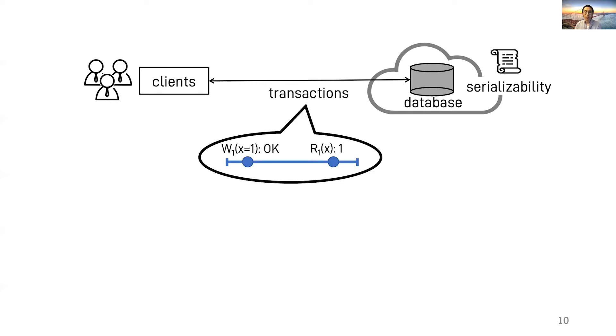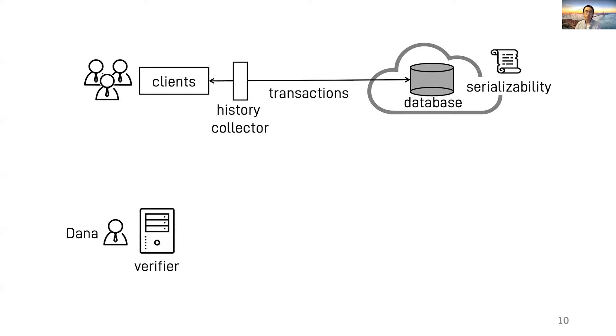In this setup, Dana deploys a history collector that captures all the inputs to and outputs from the database. The collector can be a middlebox at the company's network that intercepts the communication between clients and the database. Later, a verifier, which is the machine under Dana's control, gets the history from the collector and must answer the question, are these transactions serializable?